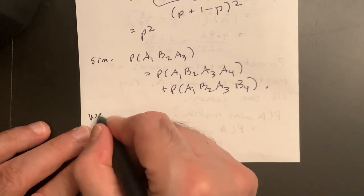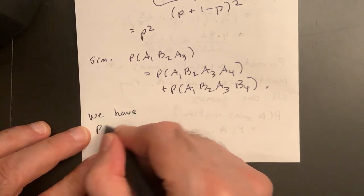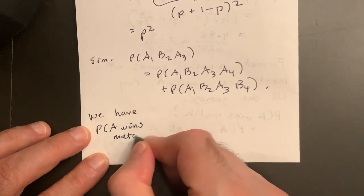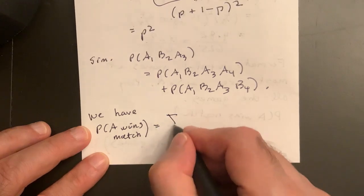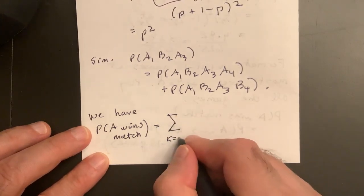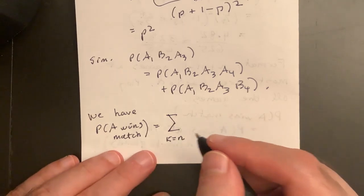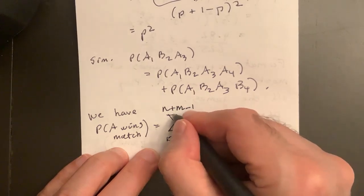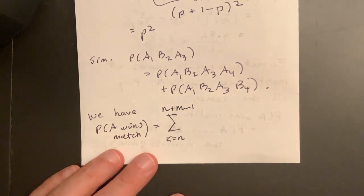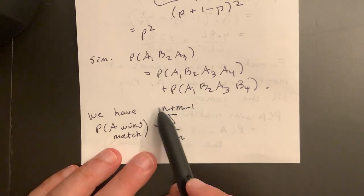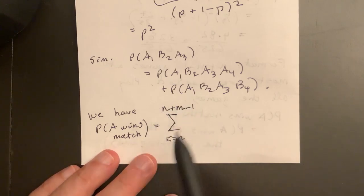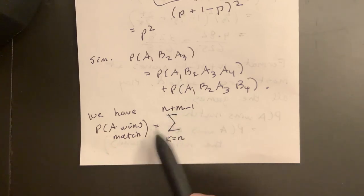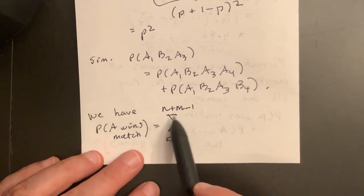we have probability A wins match is equal to the sum K equals, they need, he needs to win or she needs to win at least N. And you're going to play all N plus M minus one games that could be required. So that's important too, is to realize that's the number, total maximum number that is required.